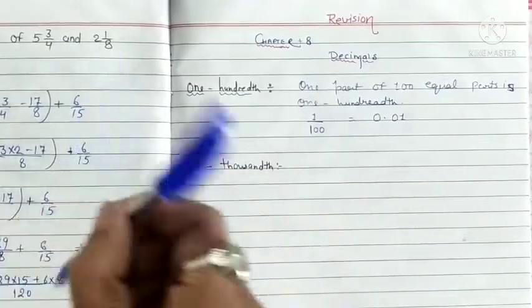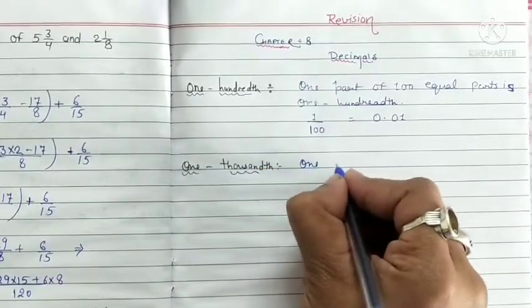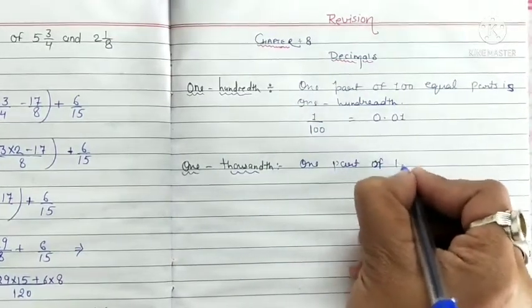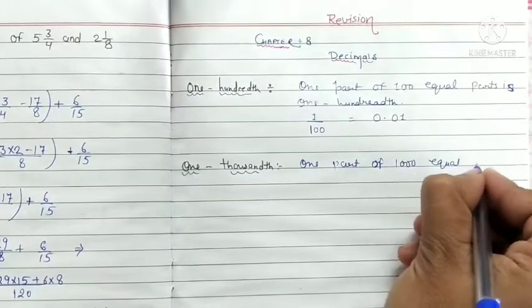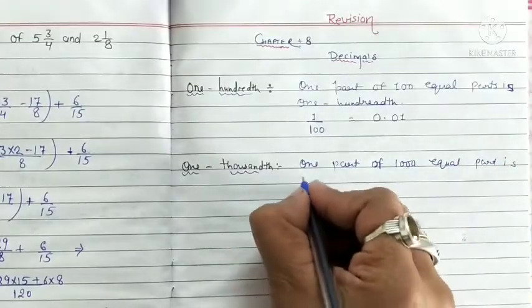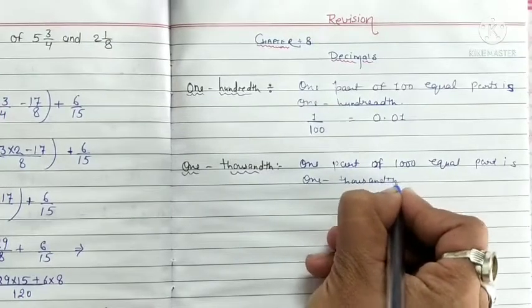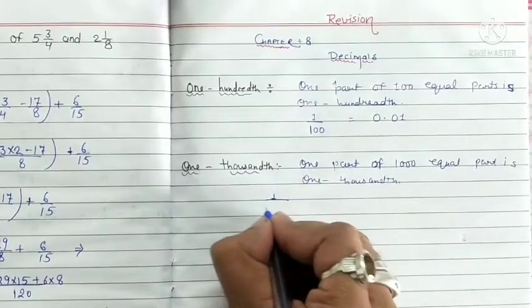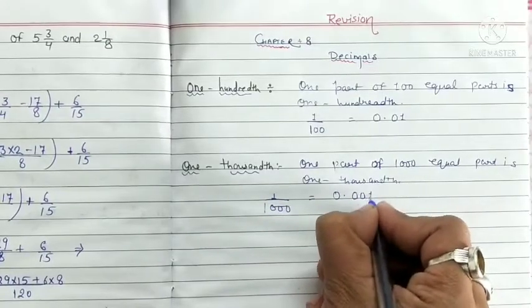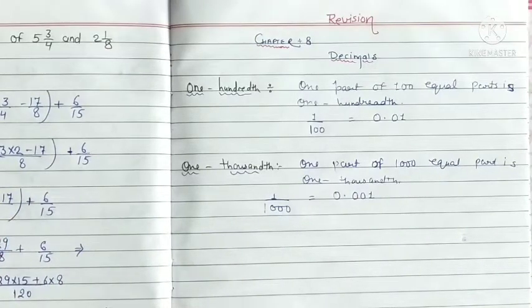One part of thousand equal parts is one upon thousand. In decimals 0.001. Now other example.